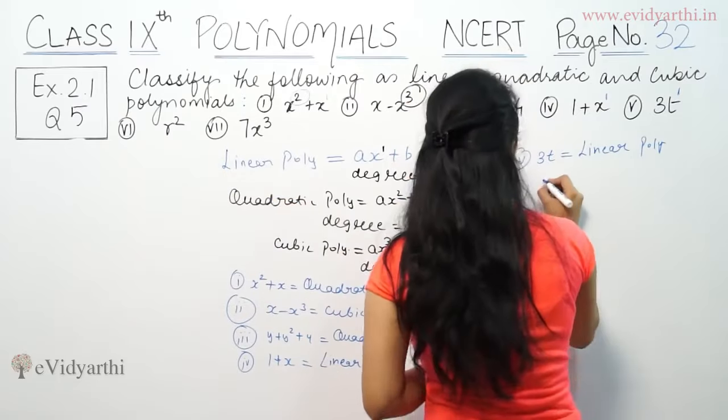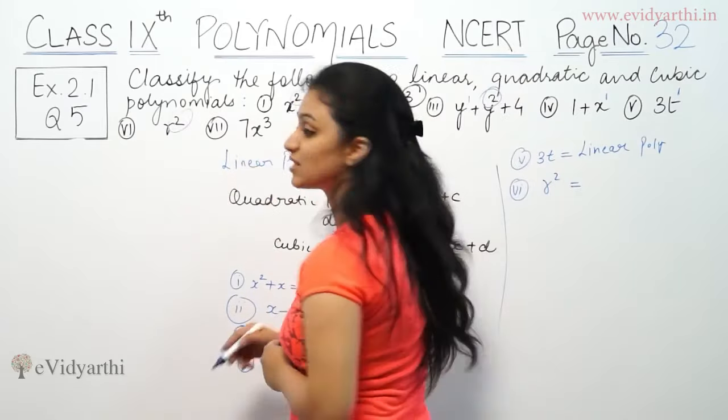Next is r². Highest power is 2. So this is a quadratic polynomial.